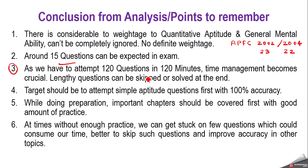There will be total 120 questions to attempt in 120 minutes (two hours), so time management becomes crucial. Lengthy questions can be skipped; if time remains you can solve them at the end. Our target should be to attempt simple aptitude questions first — like profit and loss, speed time and distance, or percentage problems — as these can be attempted very easily with 100% accuracy.